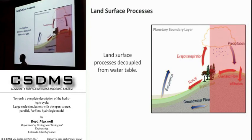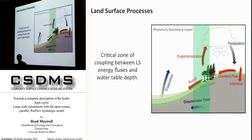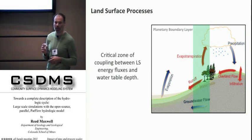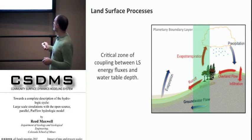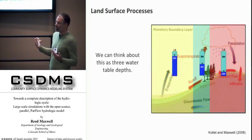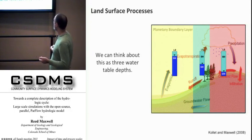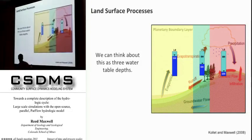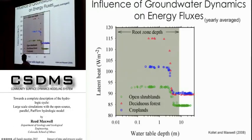There may be some recharge flux down to the subsurface, but that's the extent of the coupling. We hypothesize there should be a critical zone where we have a really tight interaction between land surface processes and water table depth. We can think about this as columns breaking into categories by water table depth: a very close groundwater to the land surface, a very far groundwater that would disconnect, and this critical zone where small changes in groundwater depth give us big changes in land energy flux.